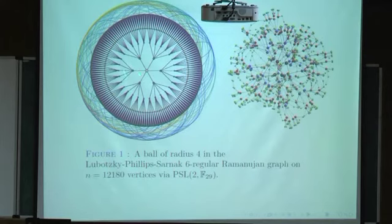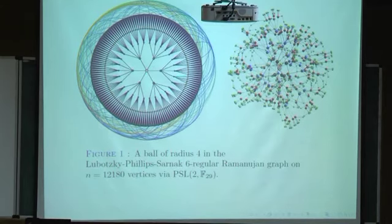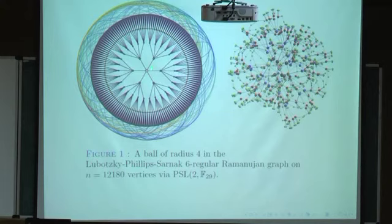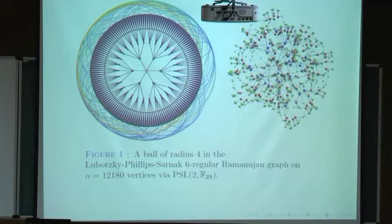This is some attempt to visualize these graphs. This is a graph with 12,000 vertices, so we don't see them all here. These graphs have high girth, so if you look at the local picture around a vertex it looks like a tree for some distance, but of course it can't be a tree forever — it's a finite graph. This one is six-regular.